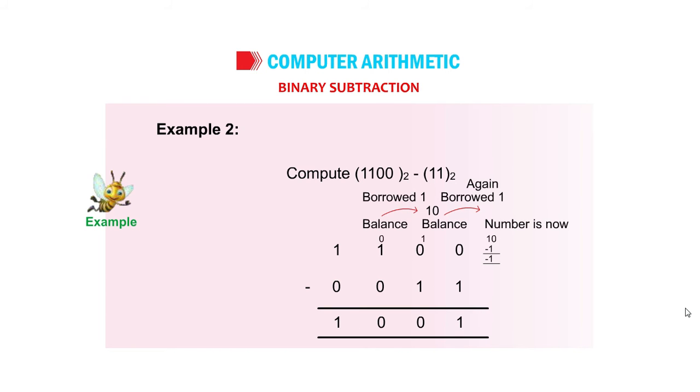Borrowed 1, balance 0, then 10, balance 1, again borrowed 1. Number is now 10 minus 1 equals 1.